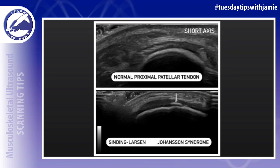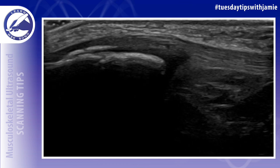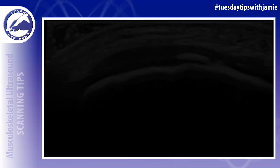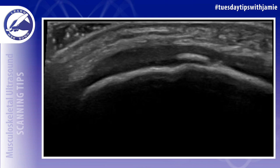Sindig-Larsen syndrome affects the lower pole of the patella at the proximal end of the patellar tendon attachment. The ossifications present are longitudinal in orientation and appear as bone spurs in the image. These ossifications will eventually become part of the patella with closure of the growth plate.